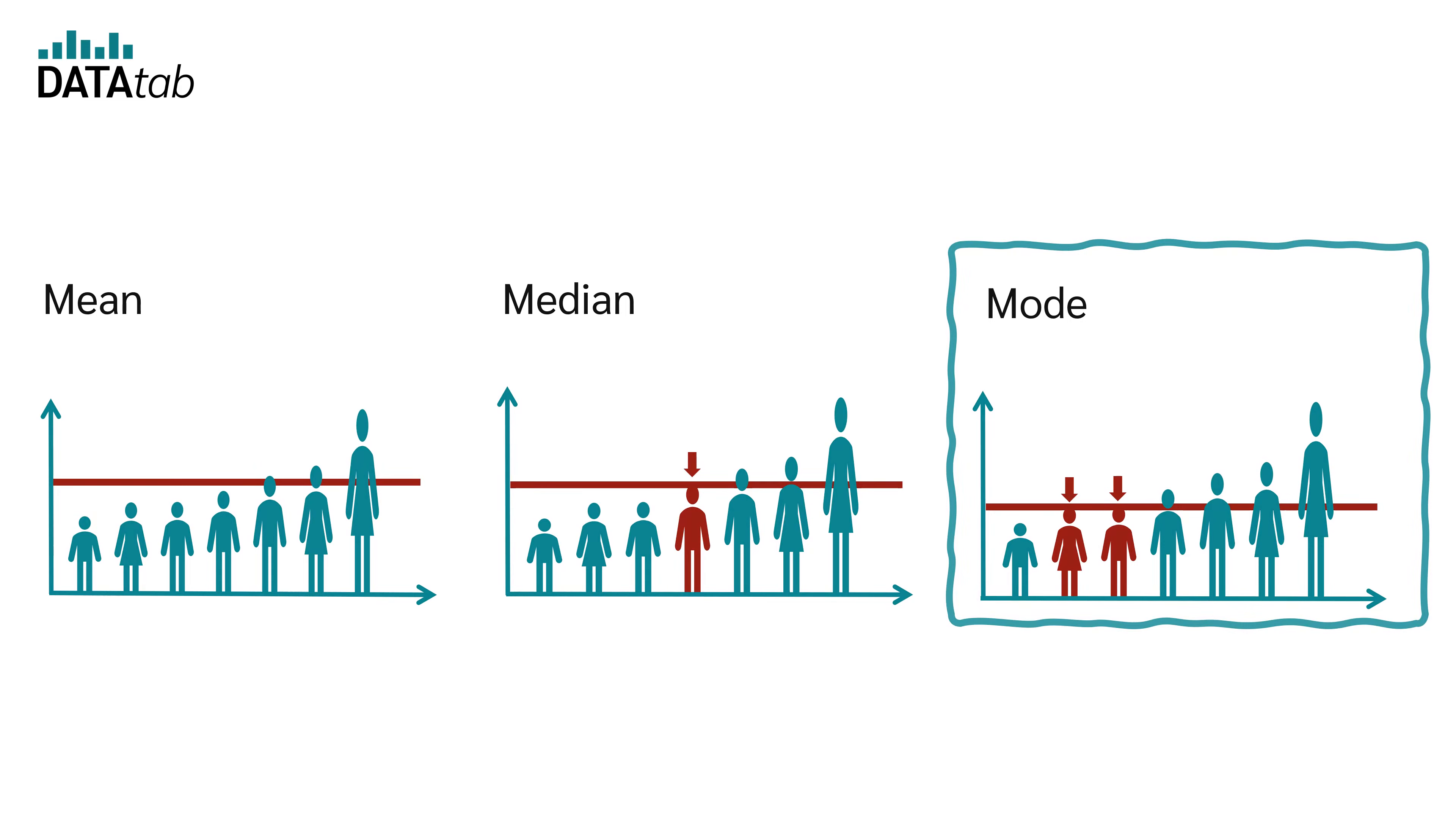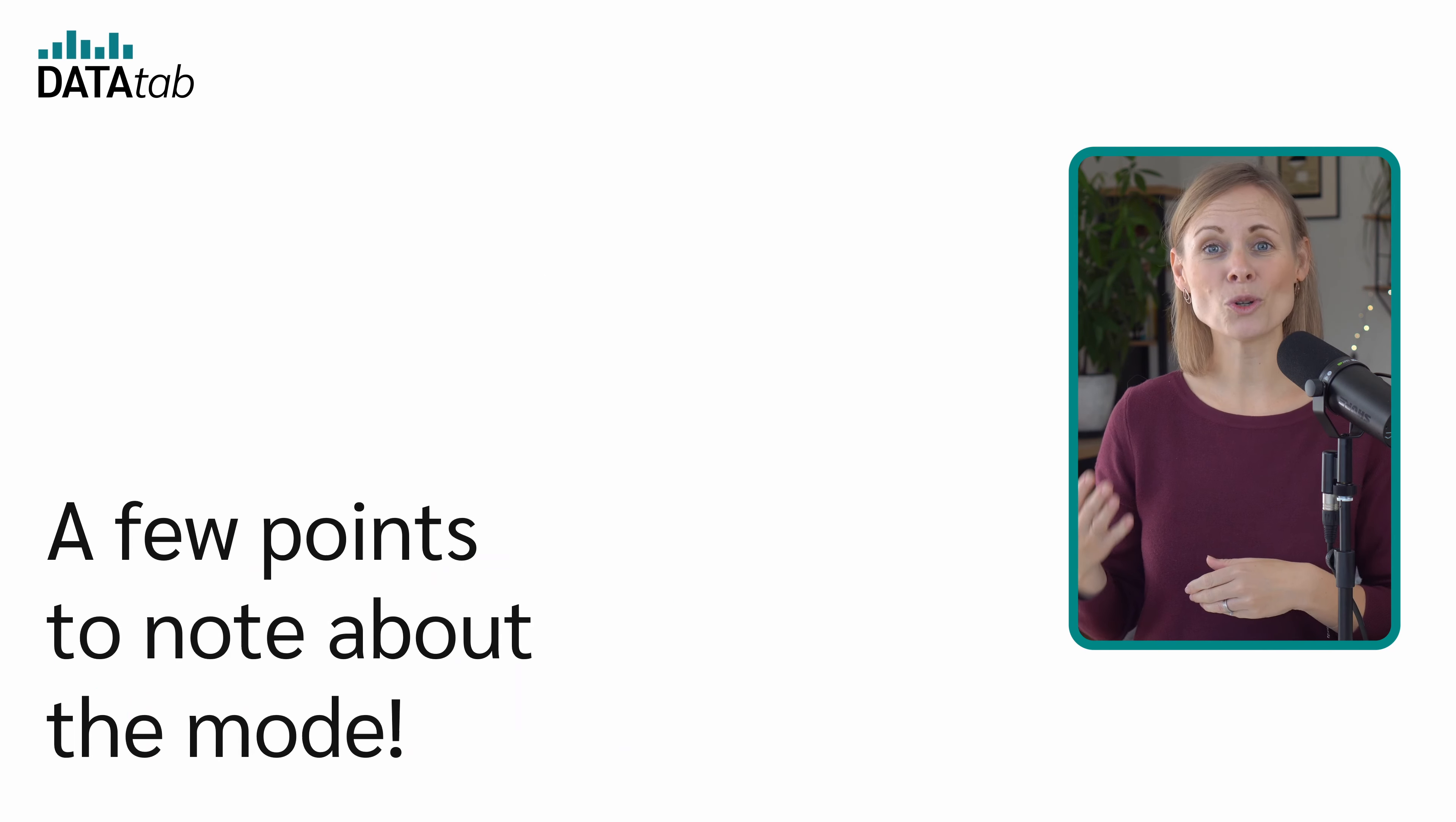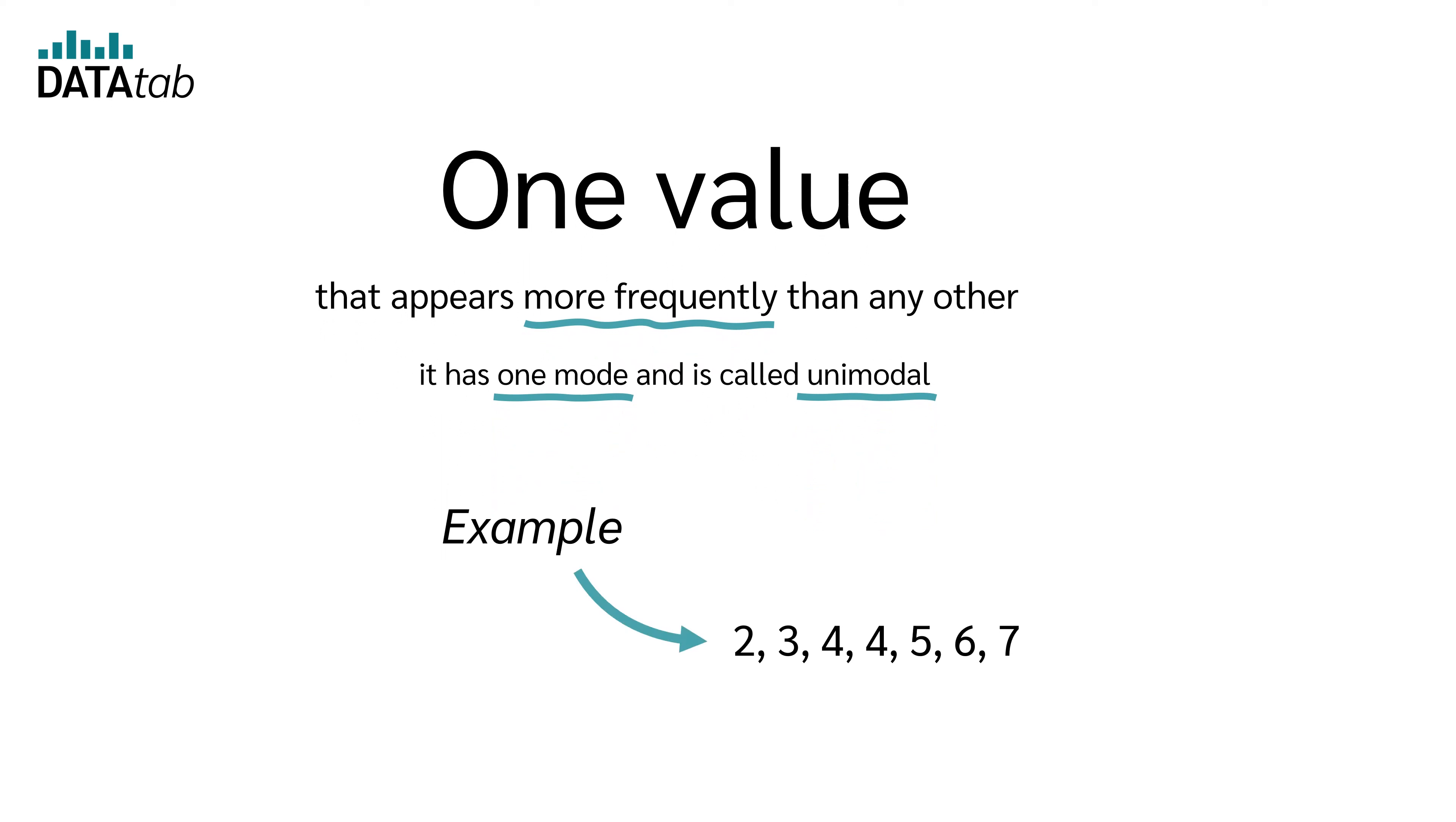Let's continue with the mode. The mode refers to the value or values that appear most frequently in a dataset. A few points to note about the mode: If a dataset has one value that appears more frequently than any other, it has one mode and is called unimodal. For example, in the dataset 2, 3, 4, 4, 5, 6, 7, the mode is 4.